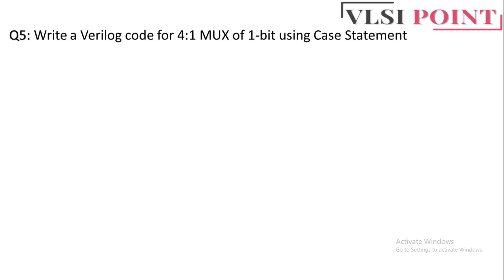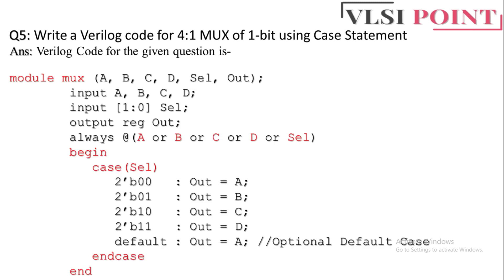Next question: write a Verilog code for a 4x1 MUX of 1-bit using a case statement. The module has inputs a, b, c, d, a 2-bit select line, and output out. Always @(a, b, c, d, select), with a case statement: 2'b00→a, 2'b01→b, 2'b10→c, 2'b11→d. A default statement is also included to avoid inferring latches — while optional for combinational circuits, it is good practice.